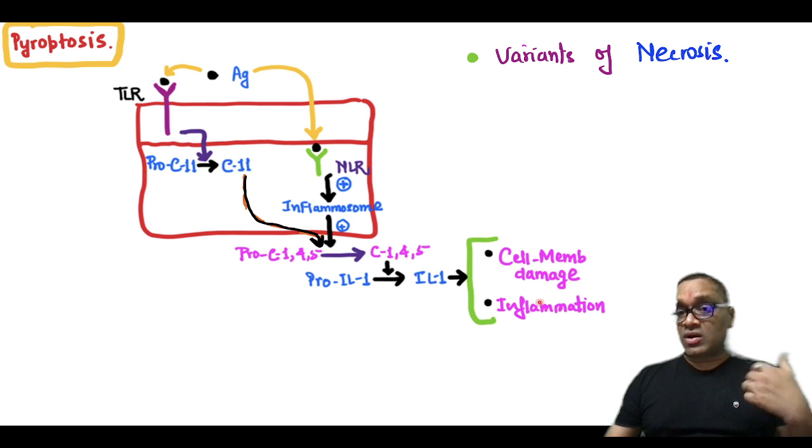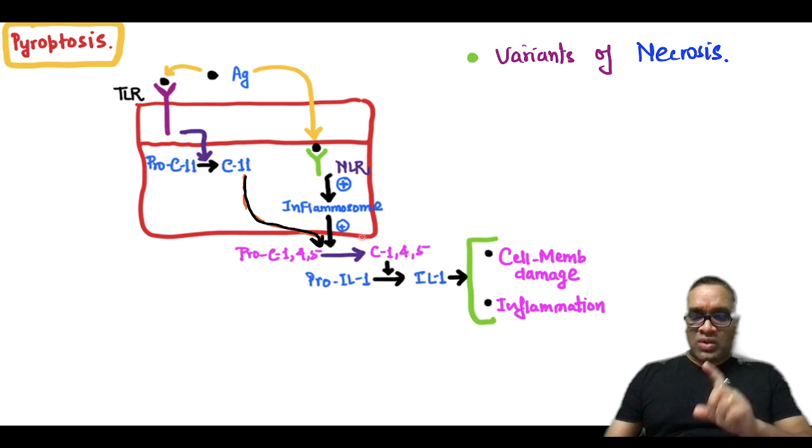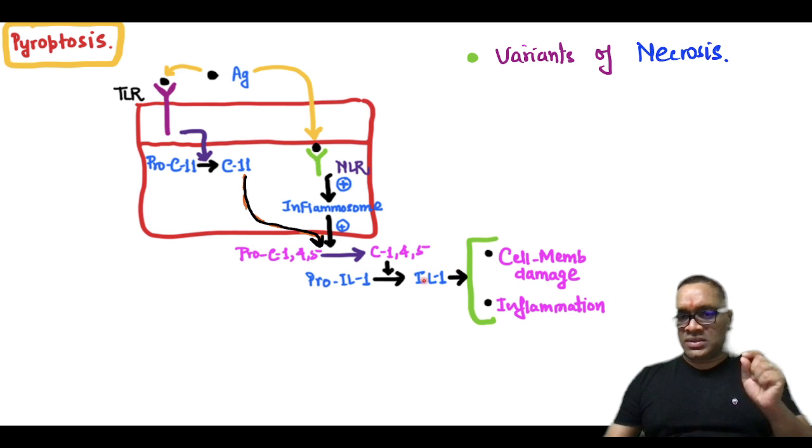So again, you can see this is like necrosis: cell membrane damage and inflammation. That is why it is also a variant of necrosis. Here, what you have to notice is that caspase 11 can also activate all these 1, 4, 5 caspases into active form. So in simple words, IL-1 activation is done by all kinds of caspases: 1, 4, 5, and 11.